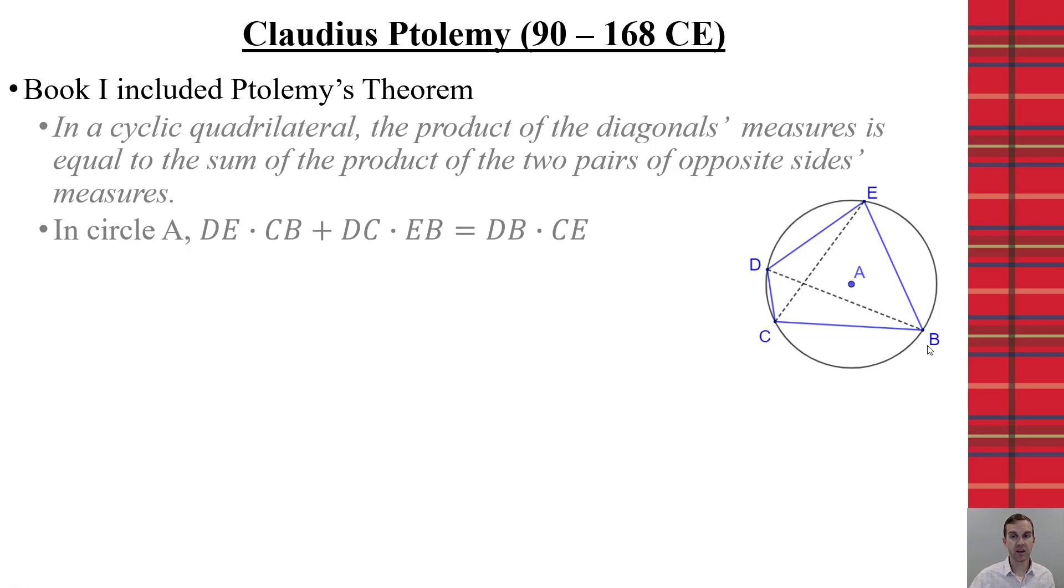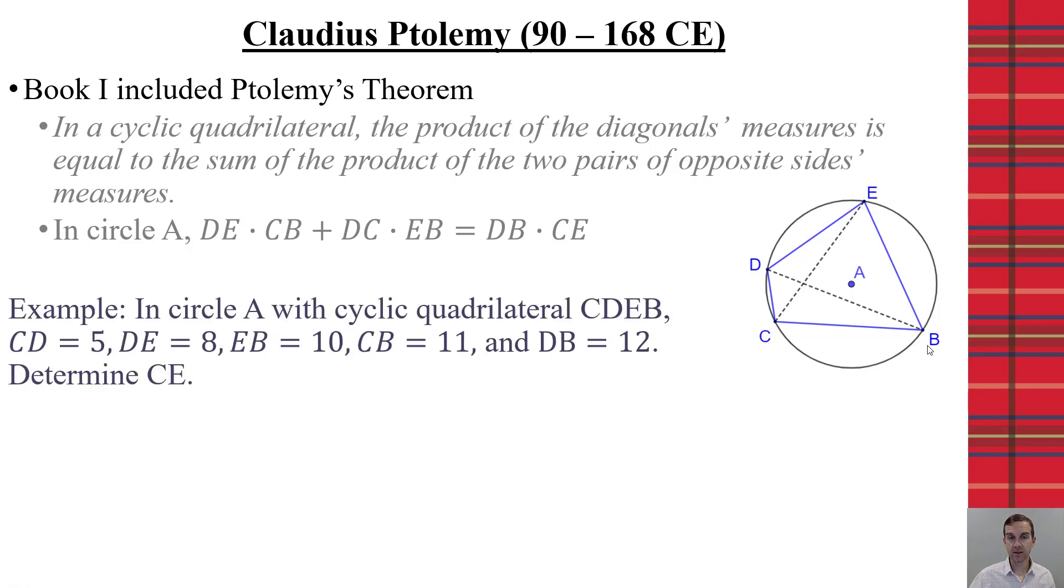Let's look at an example to see how this would work. So, say that in circle A with cyclic quadrilateral CDEB, we say that CD is 5, DE is 8, EB is 10, CB is 11, and DB is 12, and we want to determine what is that diagonal CE. So, let's label all of our parts, and we're going to use our formula here.